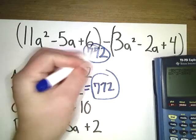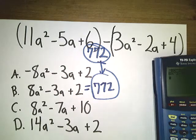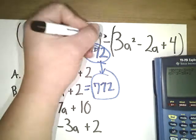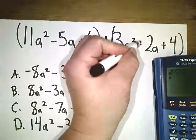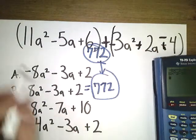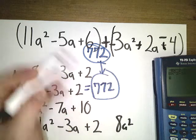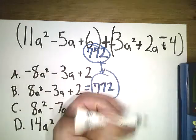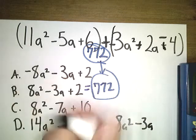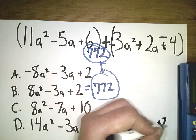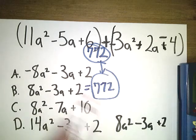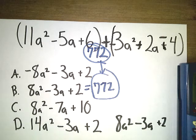8X to the second power, minus 3X, plus 2. 772. This number and this number are the same. Let's check to see if it's right, by the way, mathematically, which we did before. This would change to plus. This would be a minus. That would get a plus. This would be a minus. So the A squared, 11 minus 3 is 8A squared. Negative 5A plus 2 would be negative 3A. And 6 minus 4 would be positive 2. And look, it's the same thing. So mathematically it works. In a calculator, it works. Let's look at a couple more.